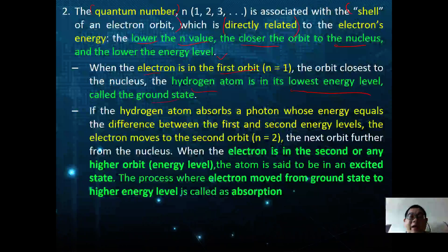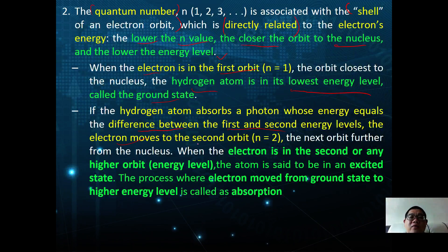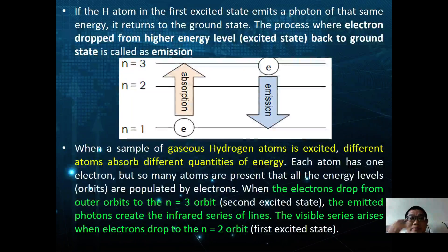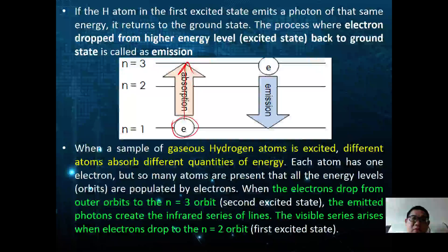If a hydrogen atom absorbs a photon whose energy equals the difference between the first and second energy levels, the electron moves from n = 1 to n = 2. When the electron is in any higher energy level, the atom is said to be in an excited state. The process of electrons moving from the ground state to a higher energy level is called absorption.